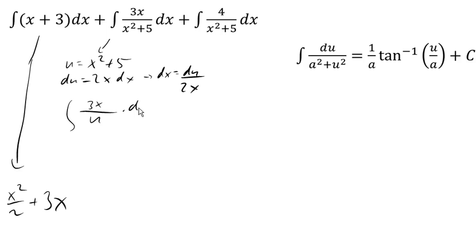Making that substitution. So we got 3x over u times du over 2x. The x's cancel. And we're left with 3 halves integral of 1 over u du. Integral of 1 over u is ln. And then undoing that substitution, we get 3 halves ln of x squared plus 5.